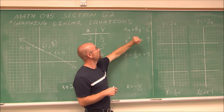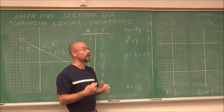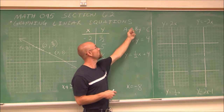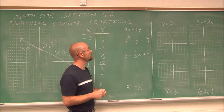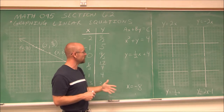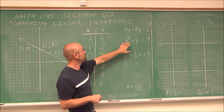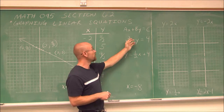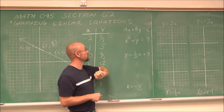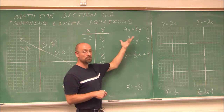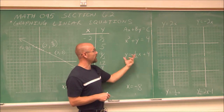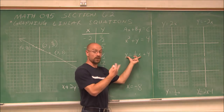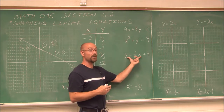We notice x and y — what is their power, their degree? Because there's nothing written, we assume 1. So these are first-degree variables. We have two variables, both to the first degree. This is how we identify a linear equation. So let's look at a few examples. I have two variables x and y, but the power here is 2. This is not a linear equation — it is a second-degree equation.